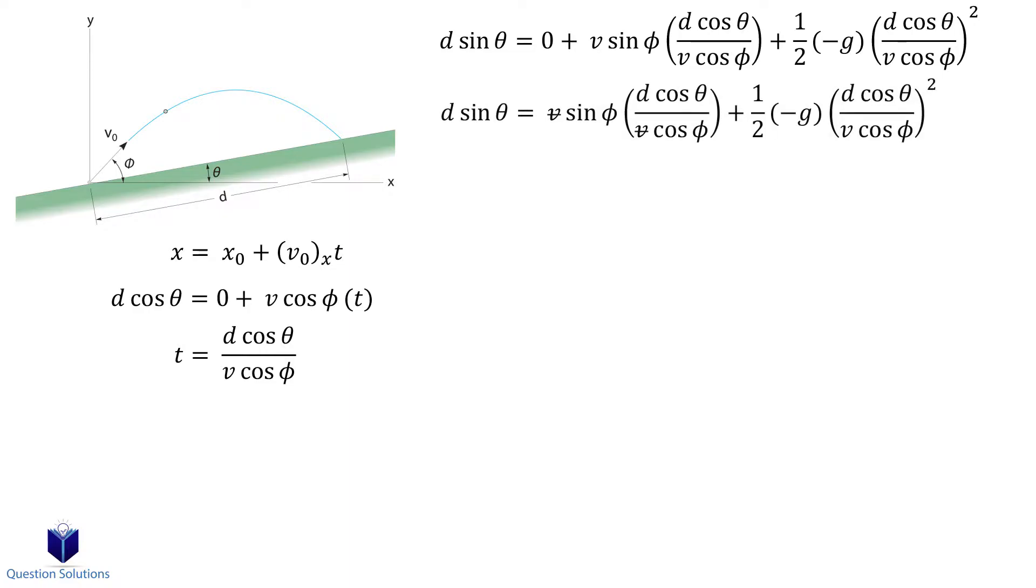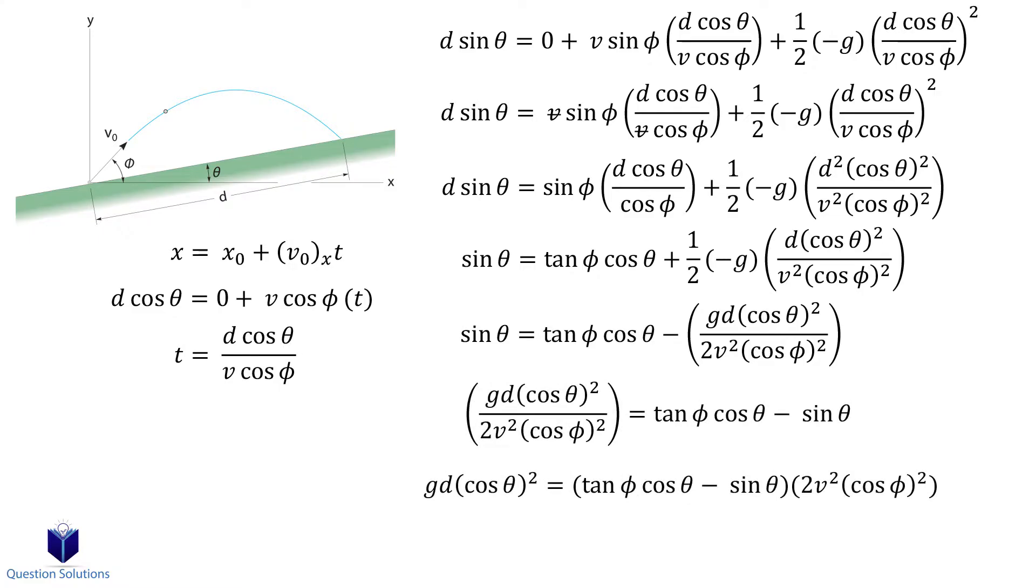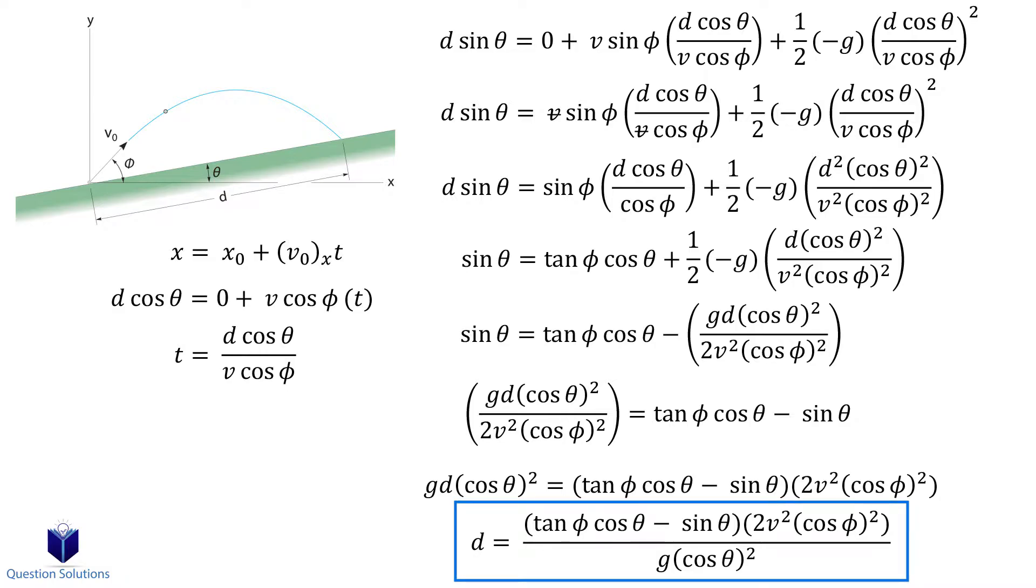We can multiply everything by 1 over d and then use the identity tan equals sin over cos. There is probably a way to simplify this further using more trig identities, but I will stop here. If anyone would like to share an easier method of getting to this point, or even further than this, please share in the comments.